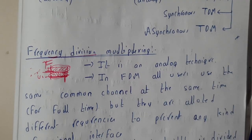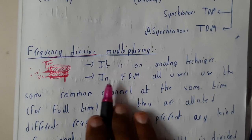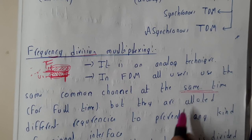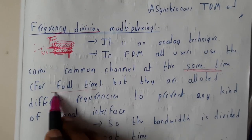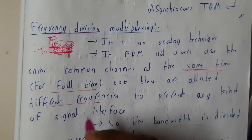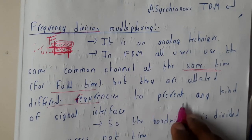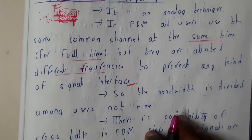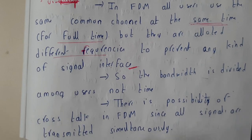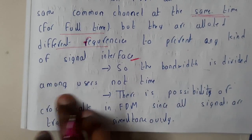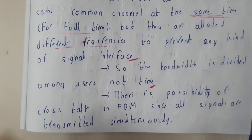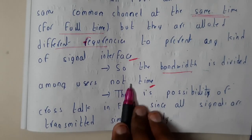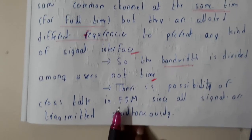In frequency division multiplexing, all users use the common channel at the same time — from start to finish — but they are allocated different frequencies to prevent any kind of signal interaction or interference. To avoid interference, the frequency is divided into two or more parts. The bandwidth is divided among the users, not the time. In time division multiplexing, time is divided and bandwidth is kept constant.